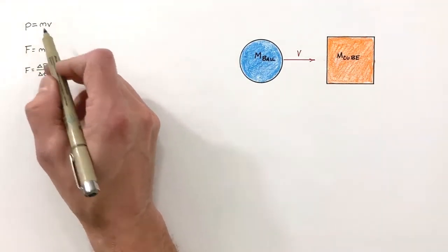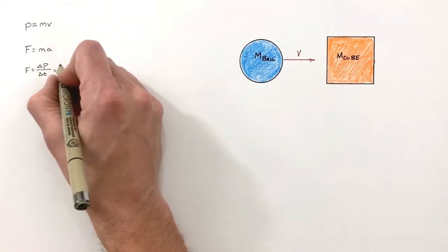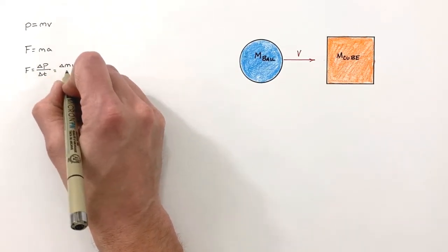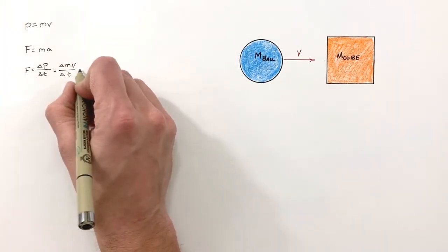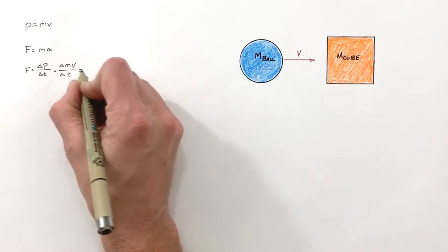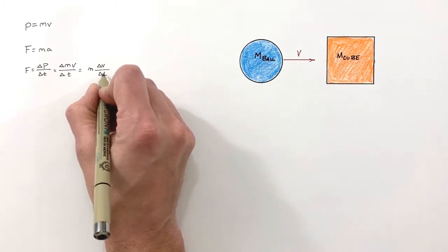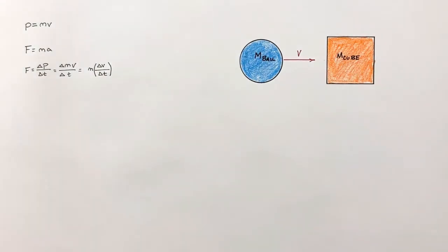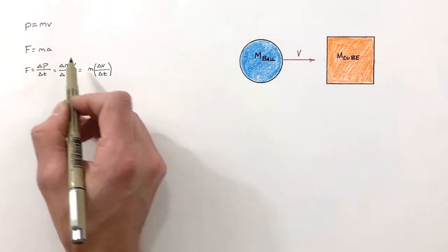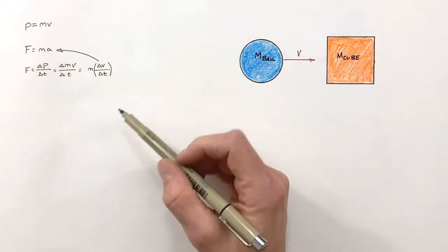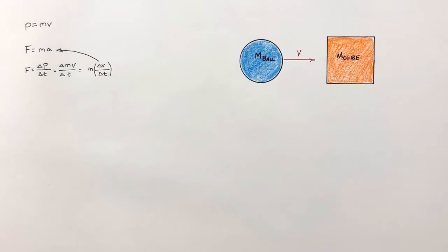Look at what's going on with momentum. We know momentum is mass times velocity, and we have force equals change in momentum over change in time. If I expand the numerator out, I get a change in mass times velocity over a change in time. Taking the mass out — because when the collision occurs the mass isn't going to change — we get mass times a change in velocity over a change in time. Change in velocity over change in time is acceleration. So you can see momentum and force in Newton's second law are tightly tied together; they're really talking about the same thing from different angles.